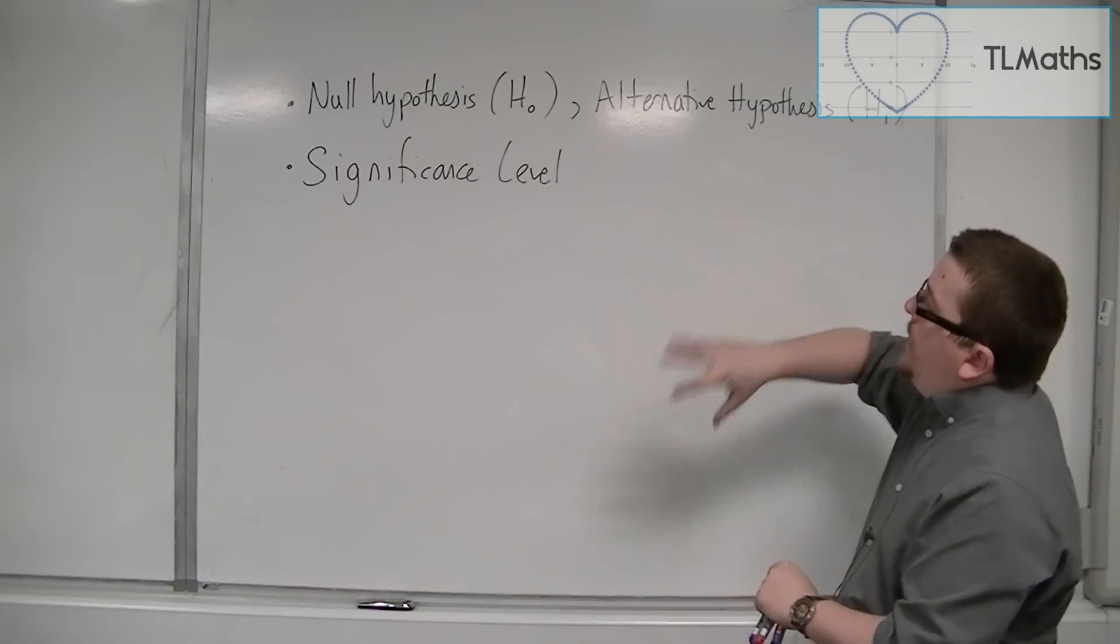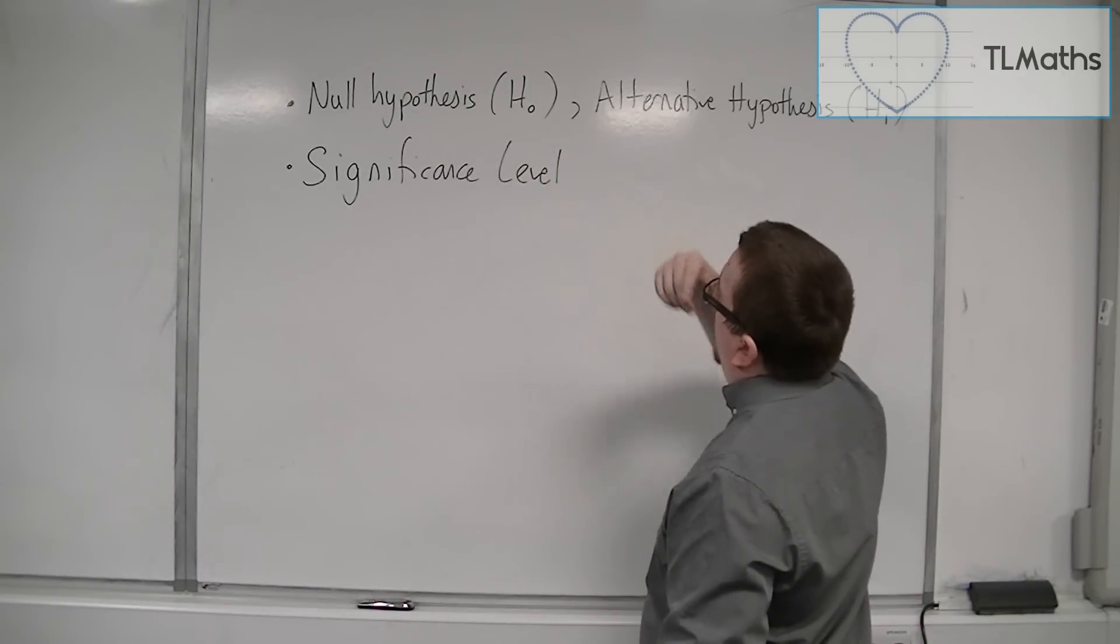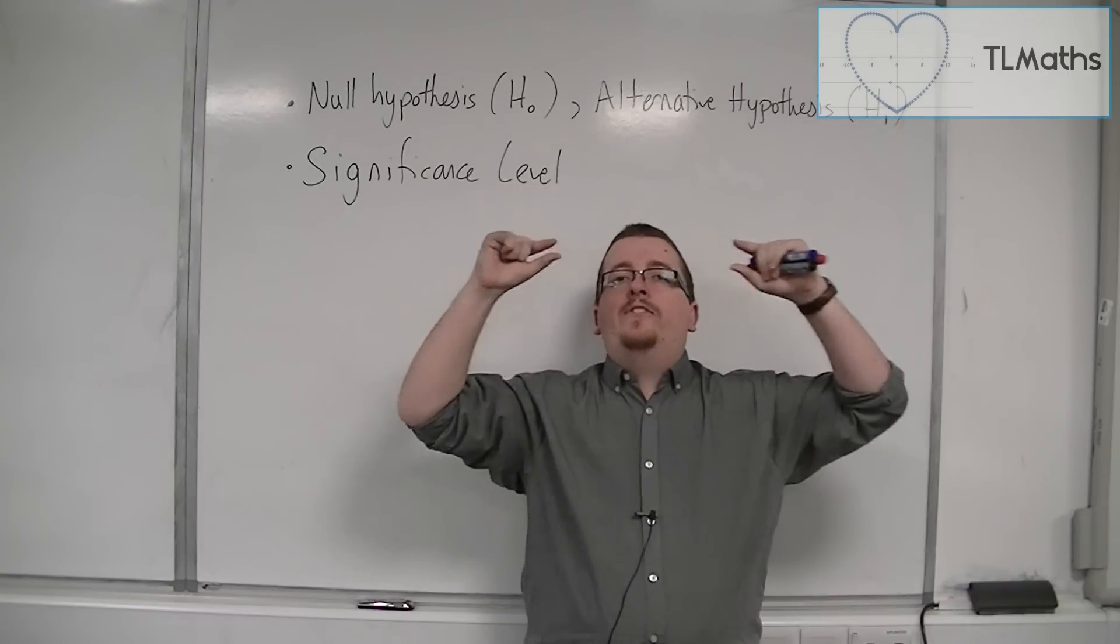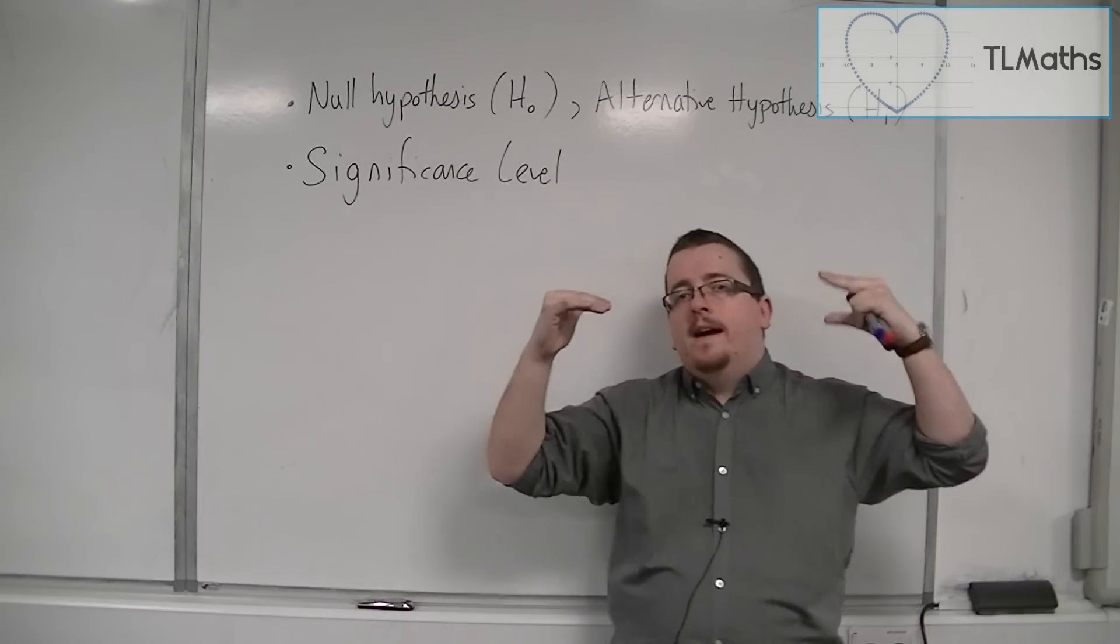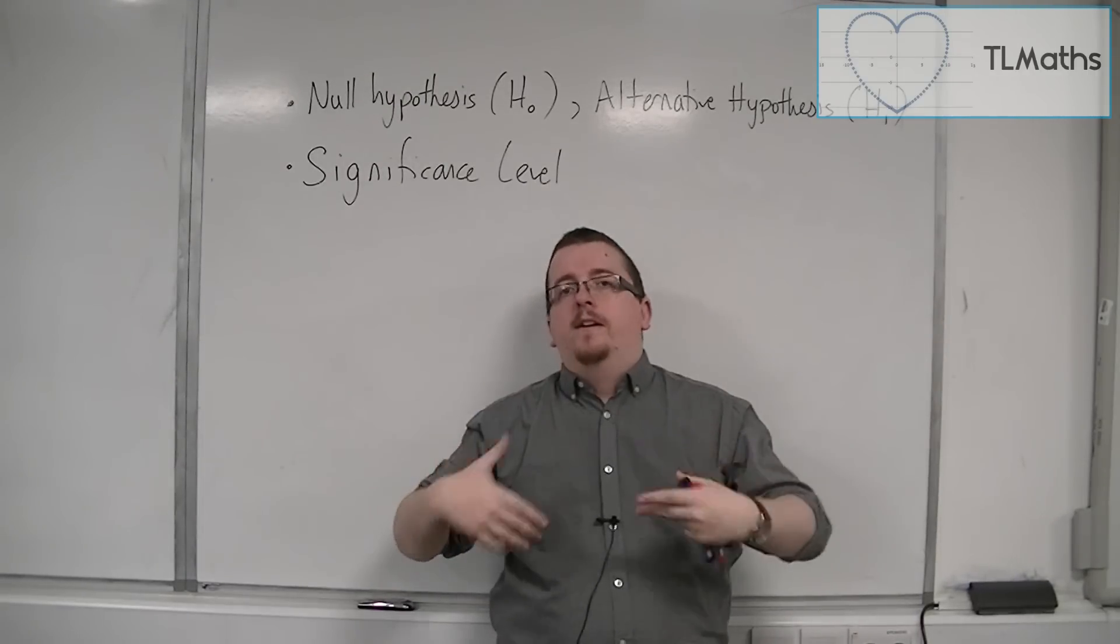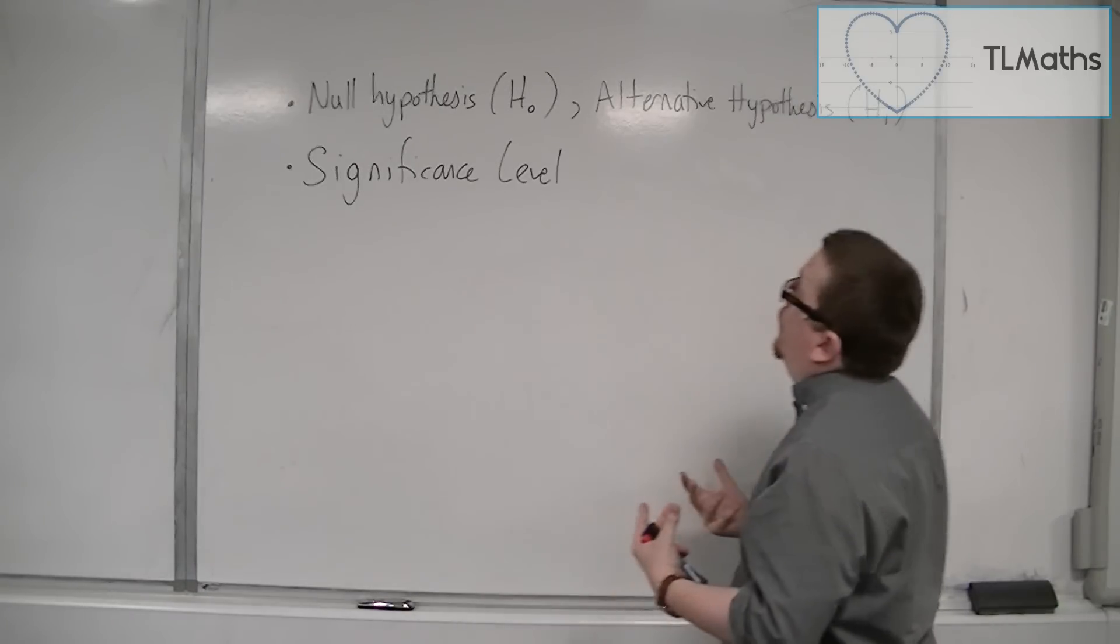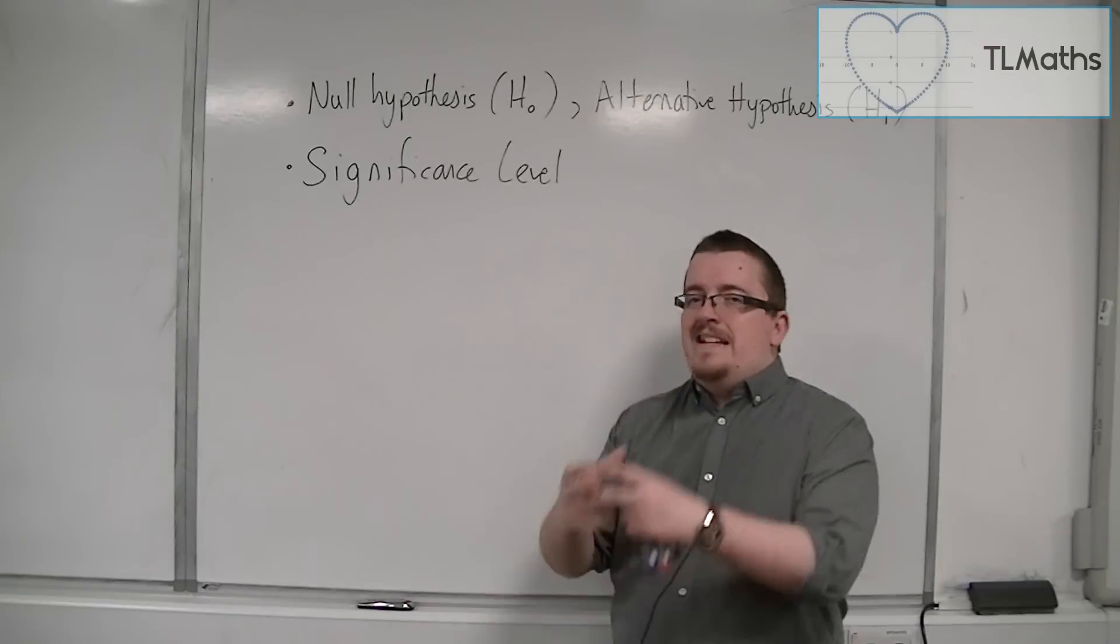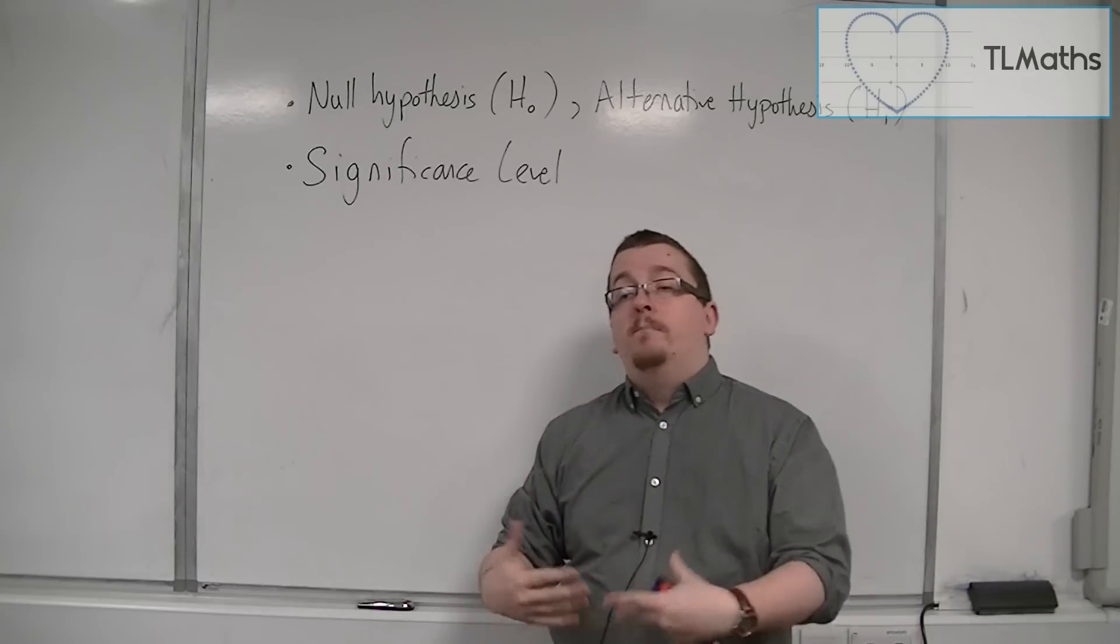So at that point, we would go back to look at the null hypothesis. And if our probability is within that significance level, that kind of boundary, then what we have is evidence that would allow us to reject the null hypothesis. So that doesn't accept the alternative hypothesis, but it has given us evidence to suggest that the null hypothesis may well be wrong.